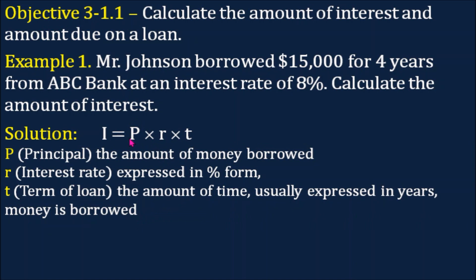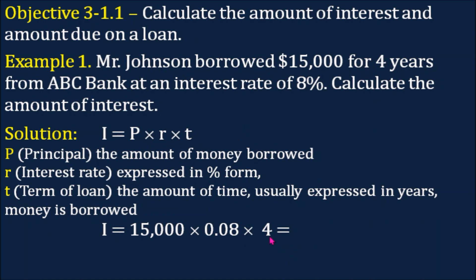Now we are going to use our formula. I, or interest, equals $15,000 — which is the money borrowed — then the interest rate is 8%, so R is 0.08, and the time, or T, is 4 years, so that's times 4. Multiplying these 3 numbers, our answer is $4,800.